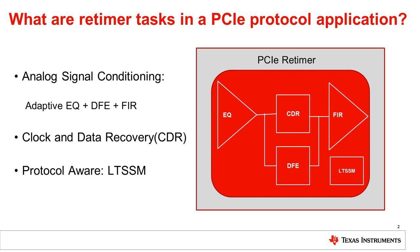Retimers are protocol aware, and they communicate between the root complex and the endpoint to optimize signal integrity on both its inputs and outputs. The link training and status state machine, or LTSSM, dictates how the retimer interfaces with the CPU or endpoint through the PCIe protocol. Each of these tasks are important to the overall function of the retimer. Let's take a closer look at how the retimer accomplishes the initial analog signal conditioning at its receiver.